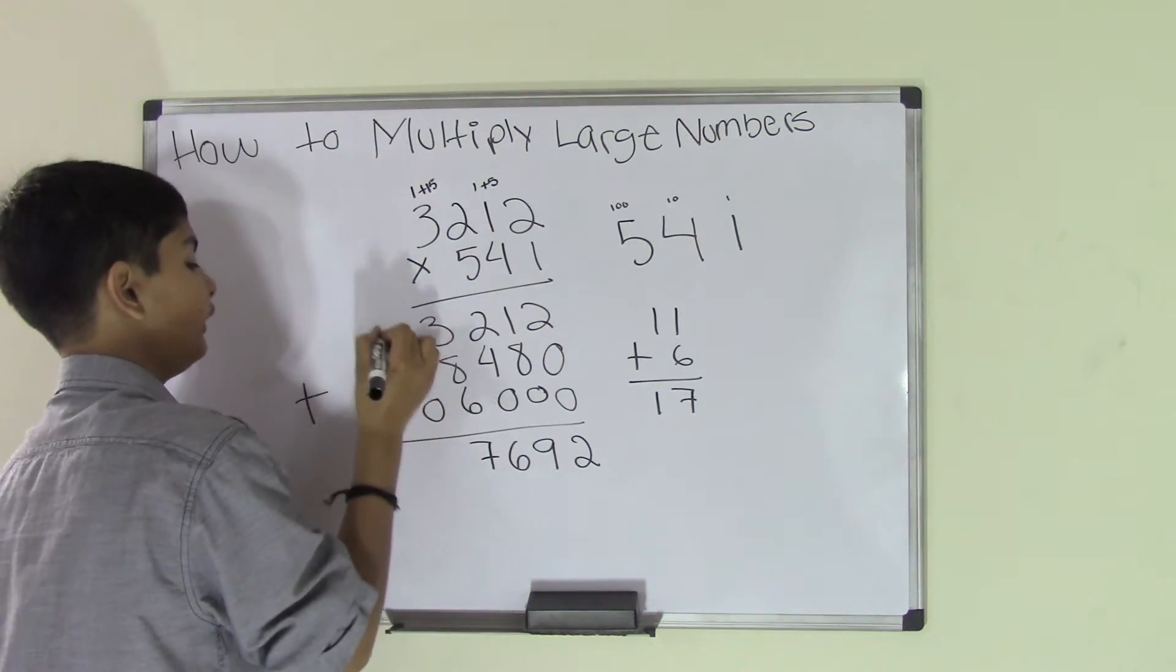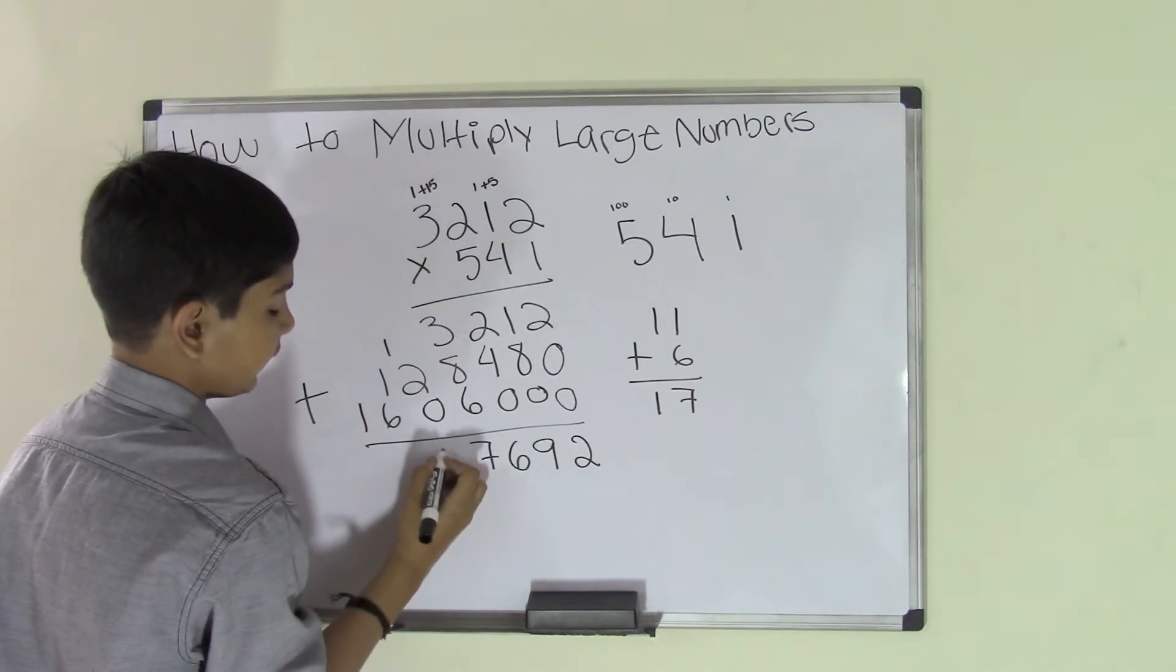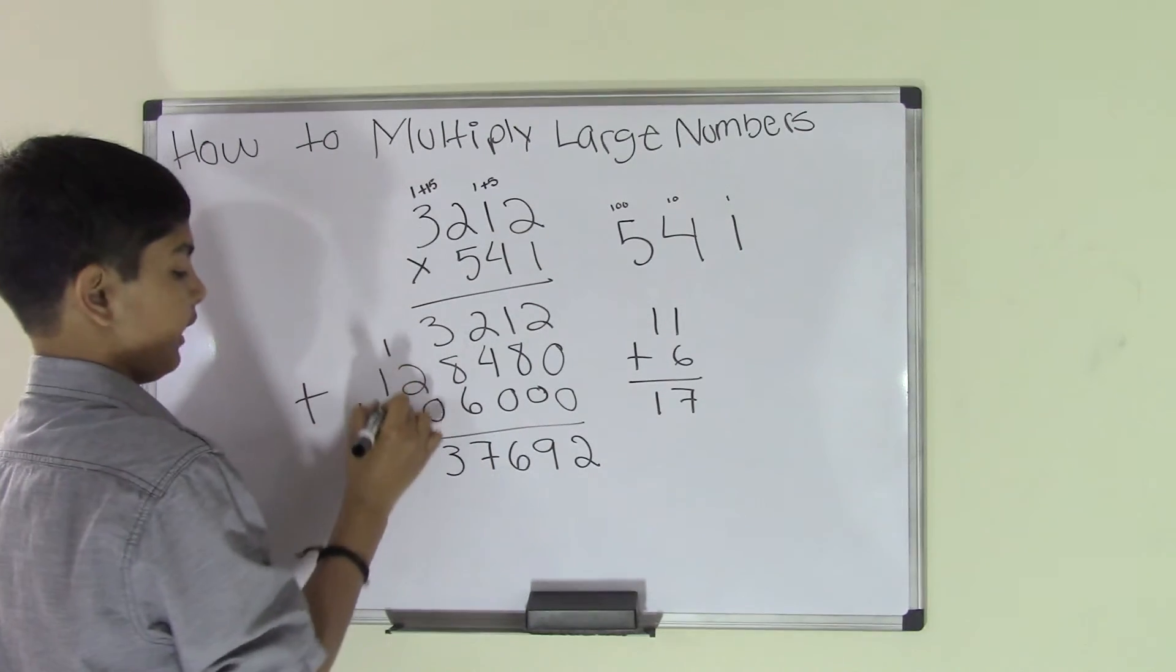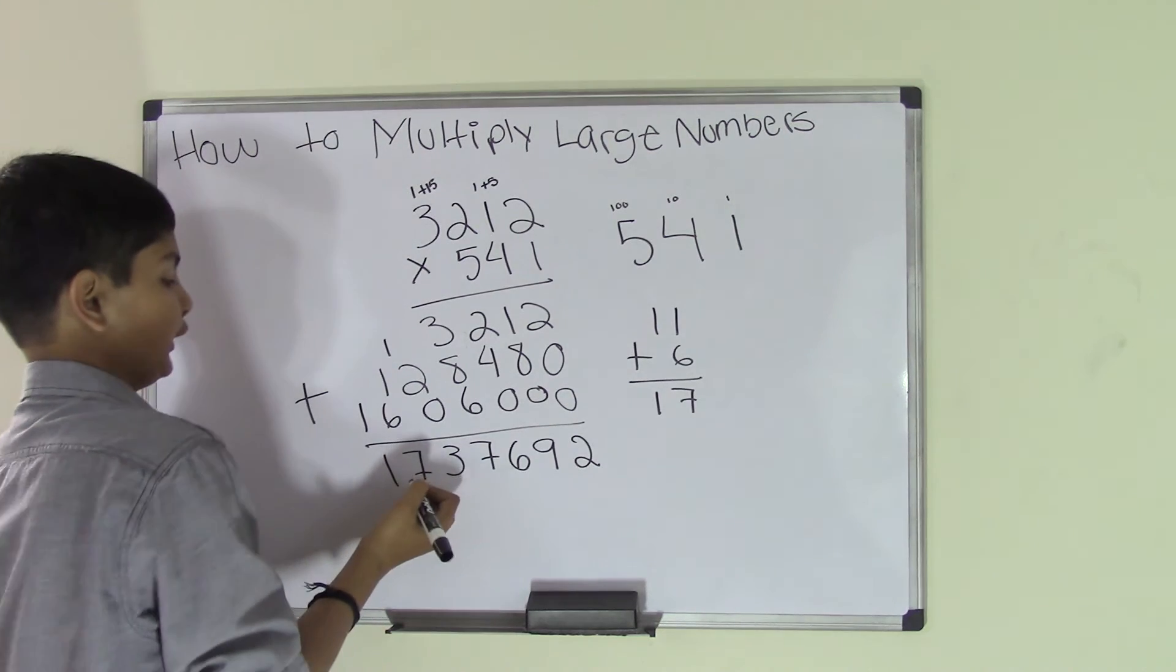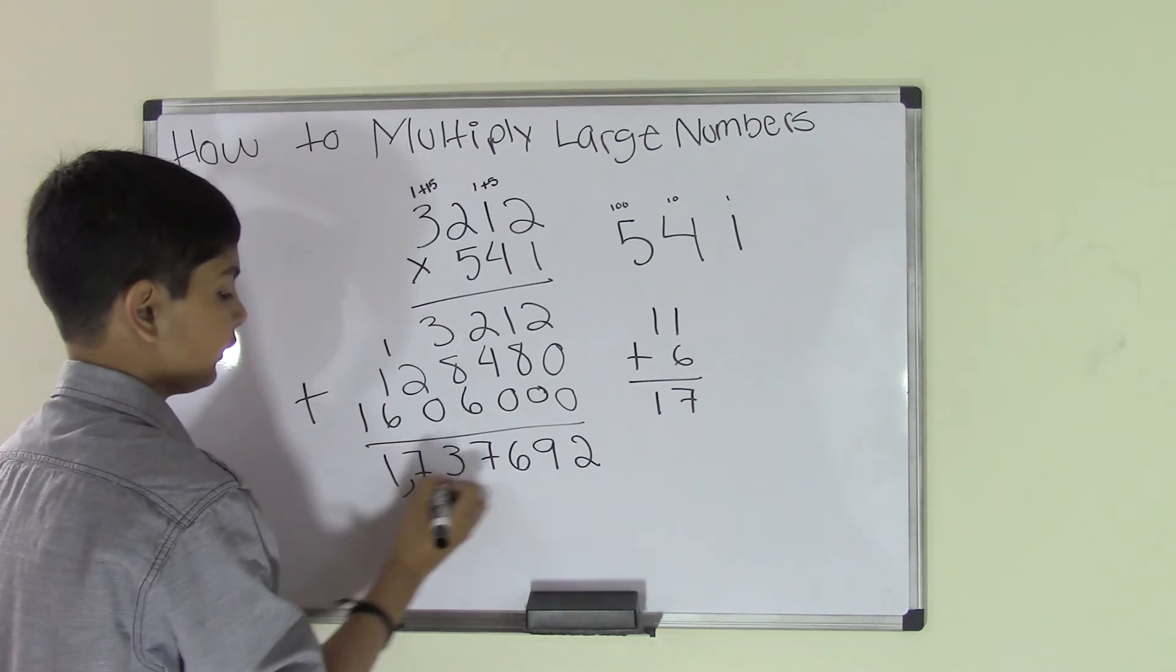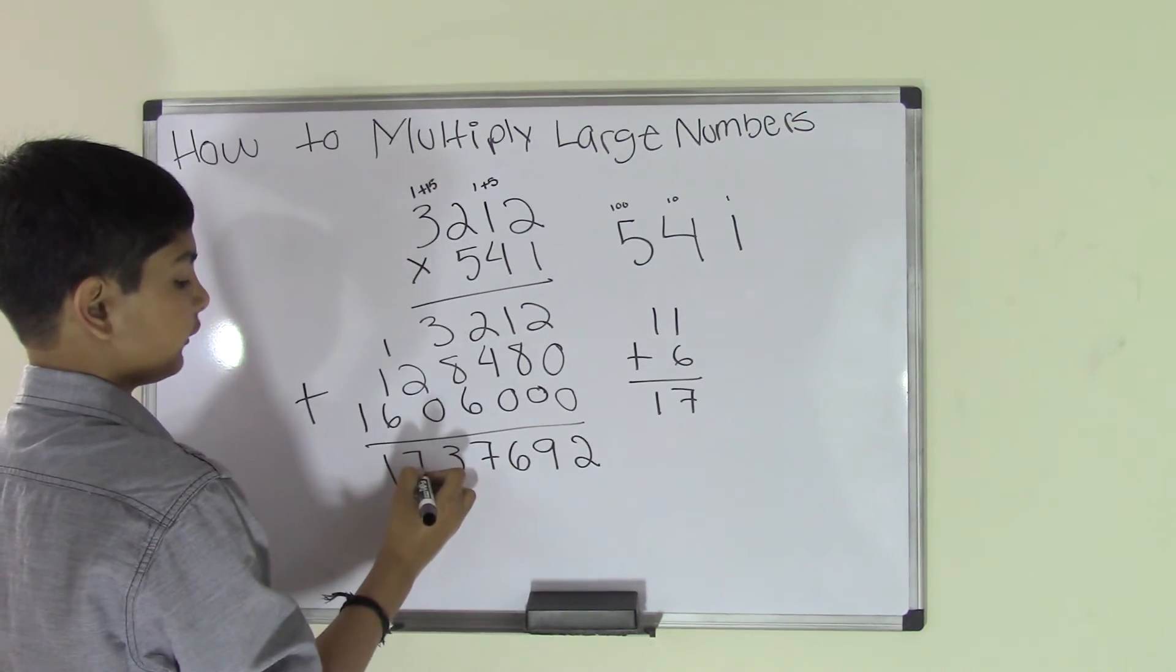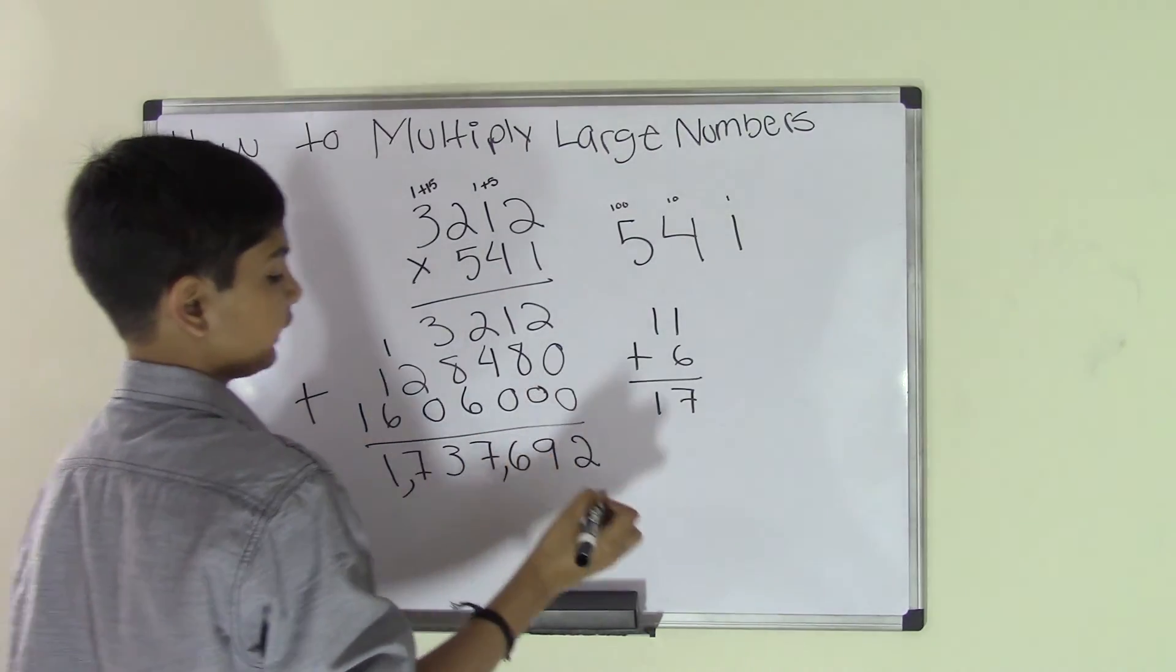Bring that 1 down over here, and you get a product of 1,737,692. That's a big product, but when we were doing this we didn't even feel a thing because all we were doing was one-digit multiplication.